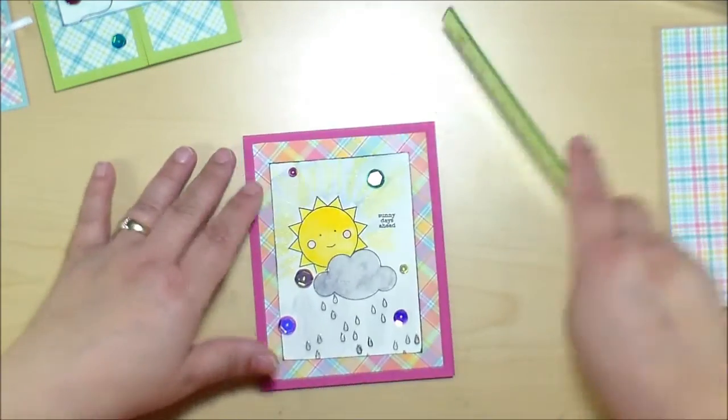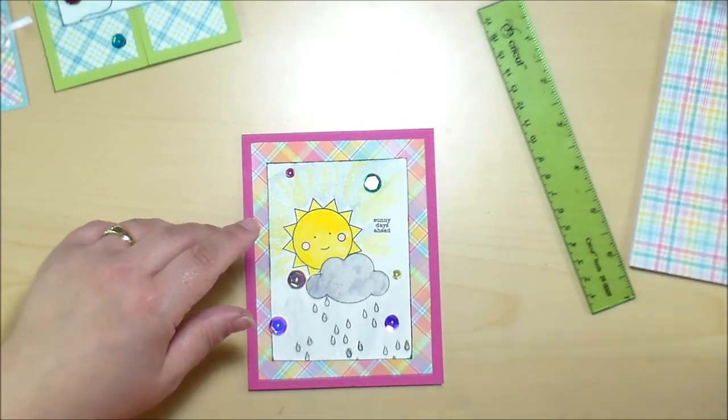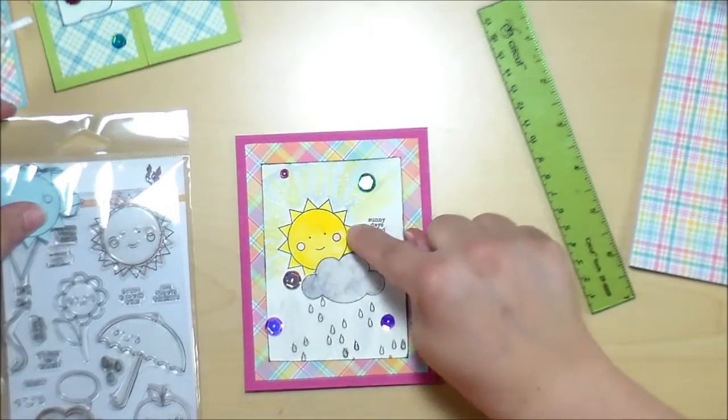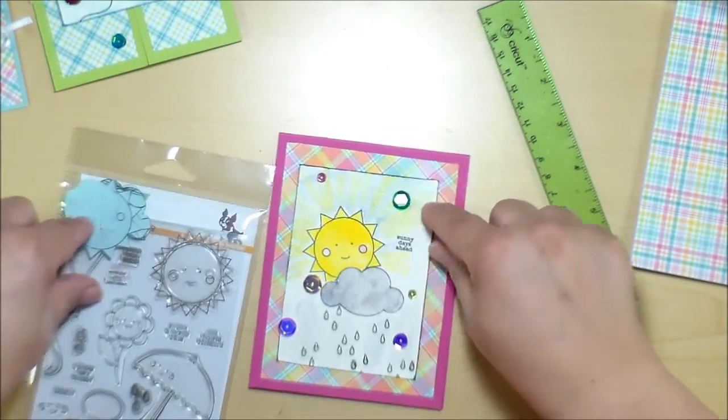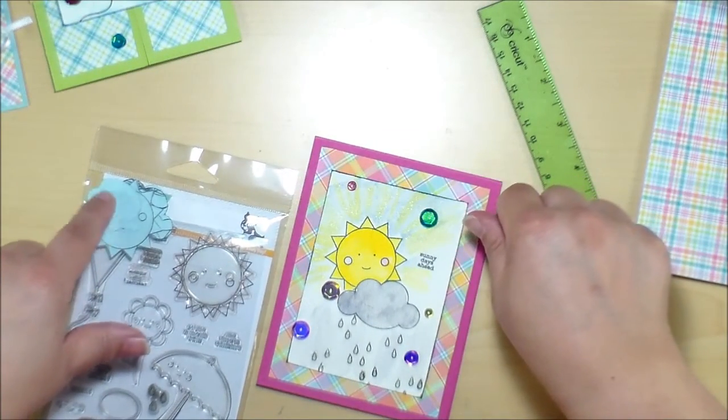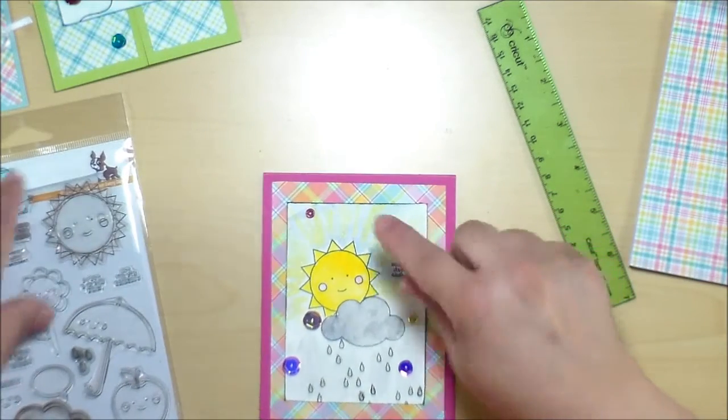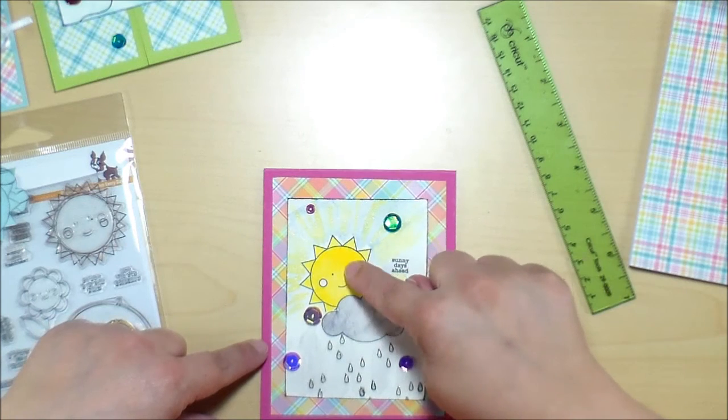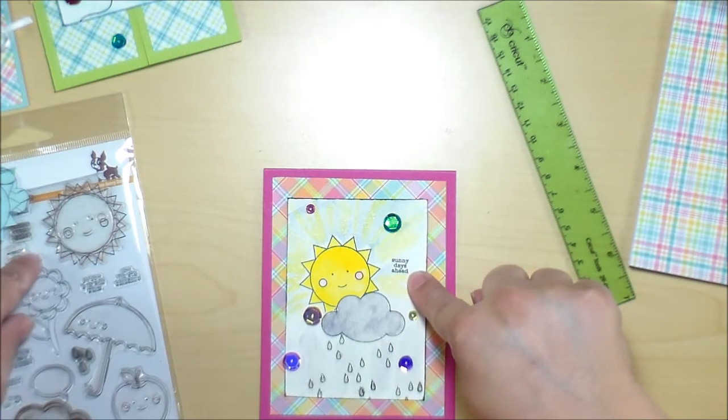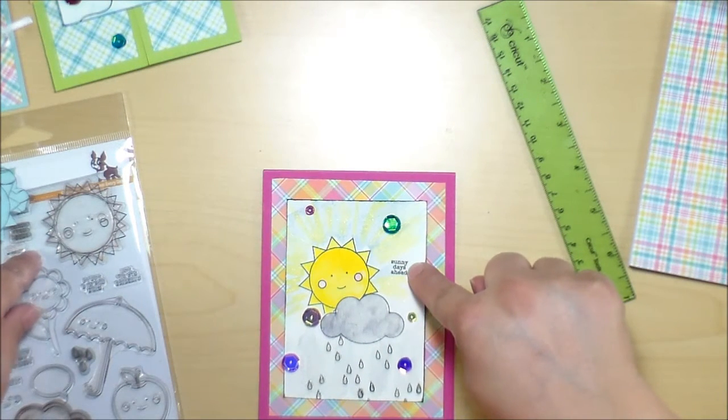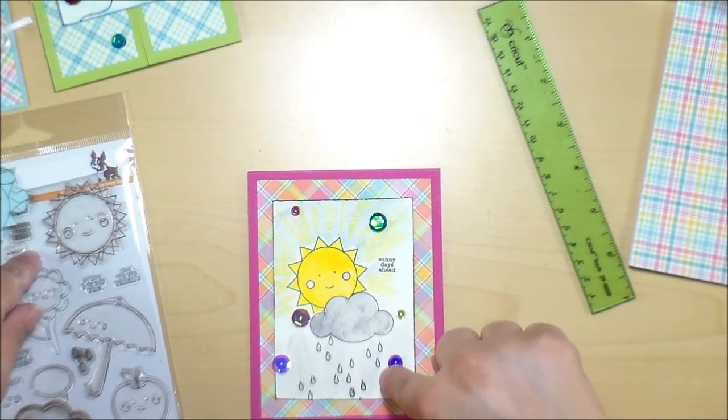Then I used the stamp set that came with the kit. So I used the sun and the cloud and I did cut some masks the first time that I used the stamp kit and I saved those masks. So actually I stamped the cloud first, then I masked it and stamped the sun. Then I used a little sentiment with the kit that said sunny days ahead and then I used the raindrop stamp and stamped it several times.